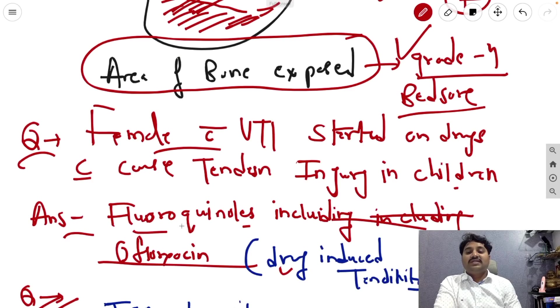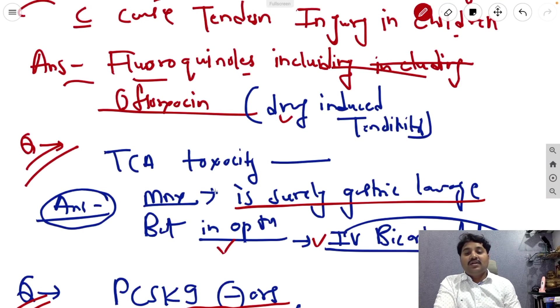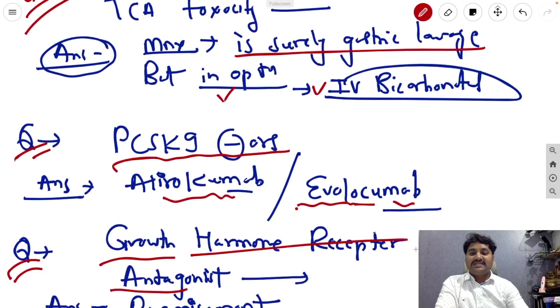The answer is fluoroquinolones including ofloxacin, also called drug-induced tendonitis. Next question is TCA toxicity, best management is surely gastric lavage but in the options which is available, that is IV bicarbonates is the best answer.